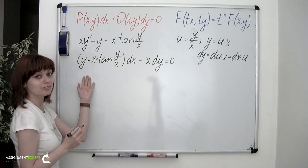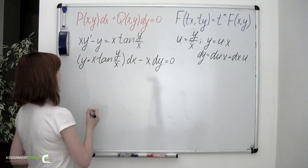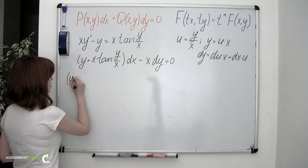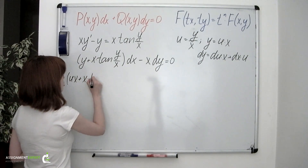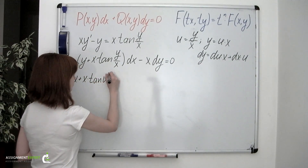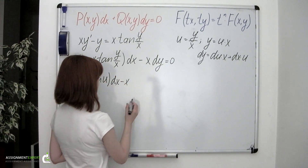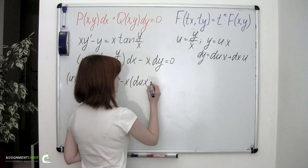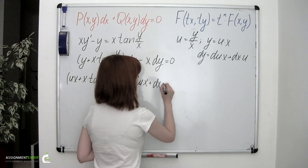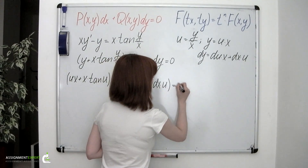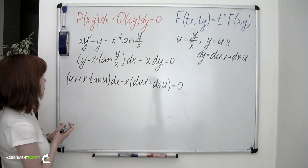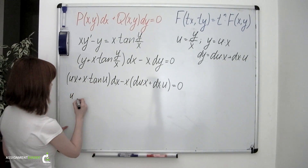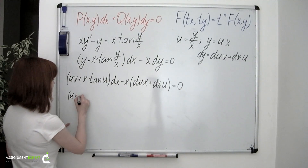Step 4: we put the variable into our equation and solve for u. We put u times x instead of y: u times x plus x times tangent of u, dx minus x times dy — which equals x times the quantity du times x plus dx times u — this whole thing equals zero. We can divide both left and right by x, and we obtain u plus tangent of u.